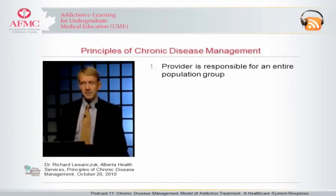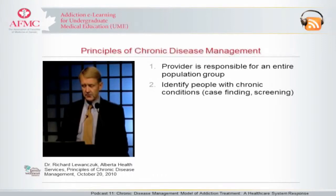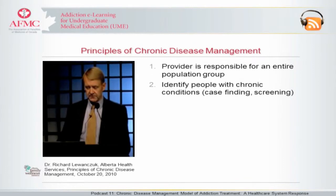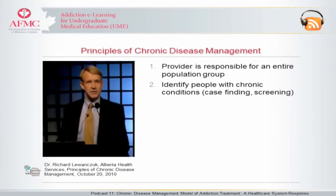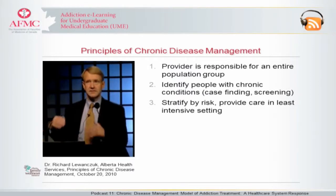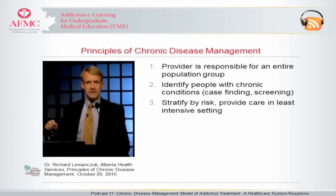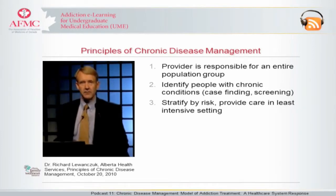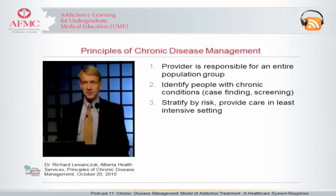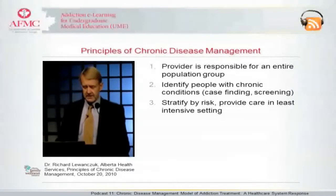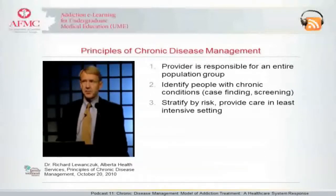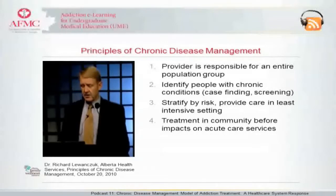This leads to the second point: we want to be able to identify people with particular chronic conditions of interest — case finding, applying screening to find all of the black sheep, so to speak. Another principle is that as we find these people, we want to stratify them according to level of risk — either severity of disease or risk of disease — and provide care in the least intensive setting possible. We don't want people with mild high blood pressure needing to go to a heart institute for treatment of plain old ordinary high blood pressure. That's why we have family doctors and primary care.